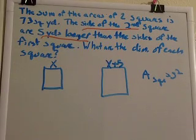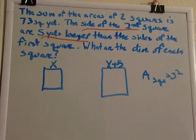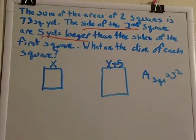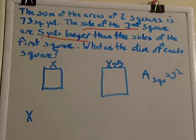Okay, so if the area of the square is side squared, and we know that the sum of these two squares equals 73 yards, then we can just add their squares. So the area of the first square is what? x times x. Or x squared.